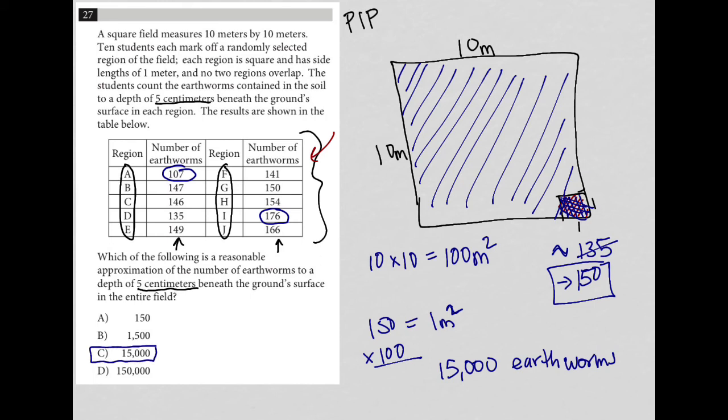Again, choice A, if I were to do a little bit of process of elimination now, choice A wouldn't make sense because as we saw, even in regions G, H, I, and J, they're all at least 150 just in that one by one square that the student tried out. So that 150 cannot be the number for the entire field.